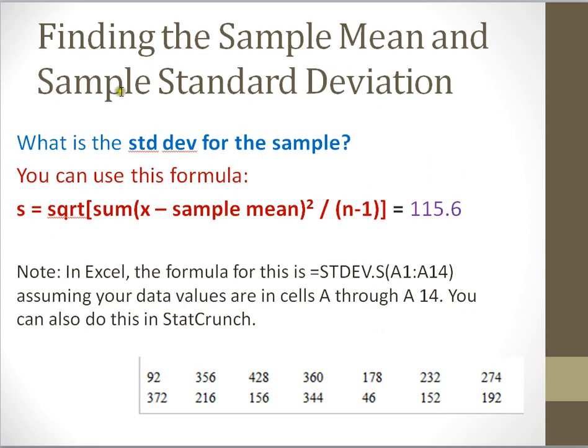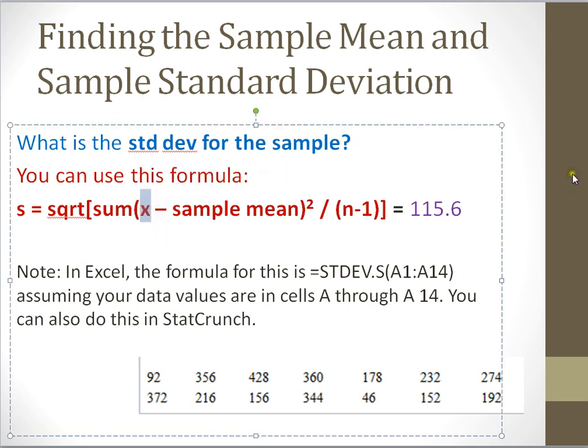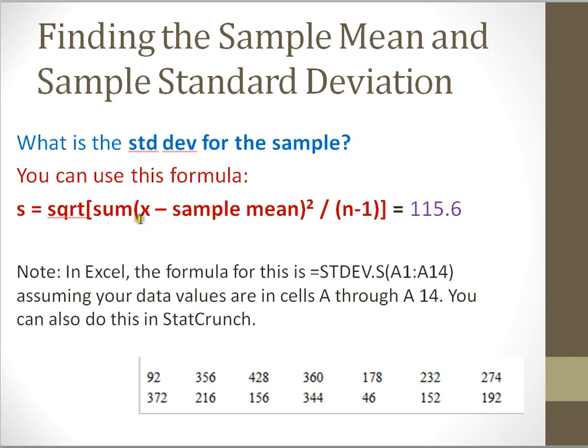Now the next question is, how do we find the sample standard deviation? That maybe is not quite so easy and takes a little bit longer by hand. There's a formula for sample standard deviation, and this is it right here. First, in this formula, and you have to do this formula step by step, you take each value in your sample, which we're going to call x. So x represents each value in this sample. Then we're going to subtract from x the sample mean that we just calculated. Remember, we just said that our sample mean was 242.7.